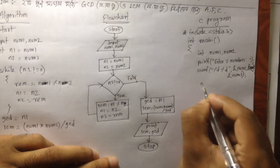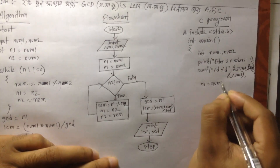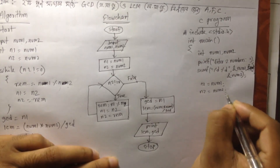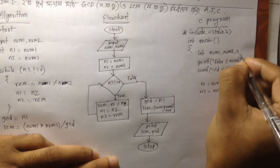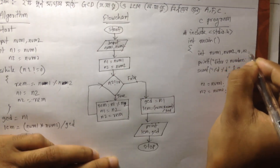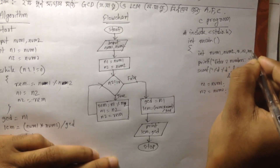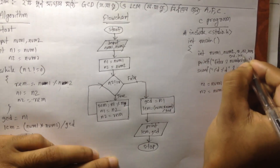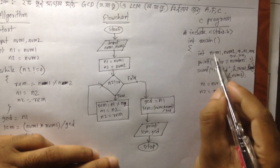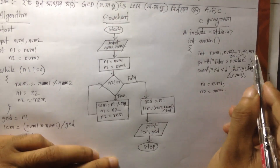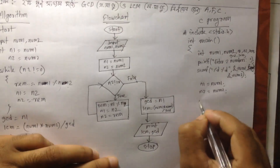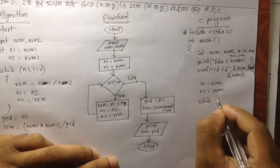We set n1 and n2 — this variable is used. We declare n1 and n2, then we have to add reminder. Then we have to add gcd and lcm variables. So variables we need to add are: n1, n2, reminder, gcd, lcm. We also have to add two temporary variables.